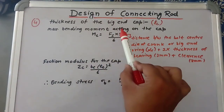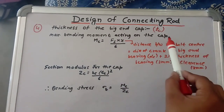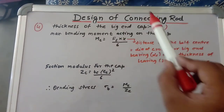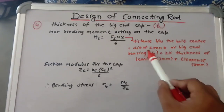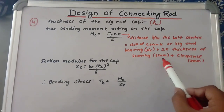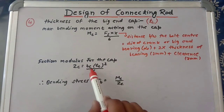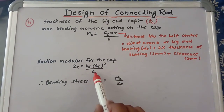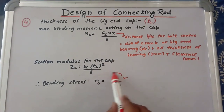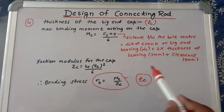The last step is the thickness of the big end cap, denoted by tc. The maximum bending moment on the cap is: Mc = Fi · x / 6, where x is the distance between bolt centers, equal to the diameter of the crank pin plus 2 times the bearing thickness (3mm) plus clearance (3mm). The section modulus for the cap: Zc = bc · tc² / 6. By equating bending stress Mc/Zc we determine the thickness tc of the big end cap.